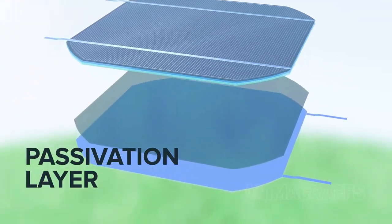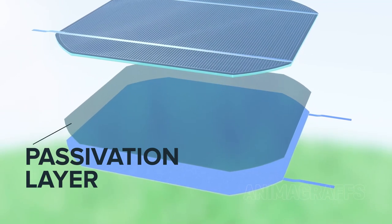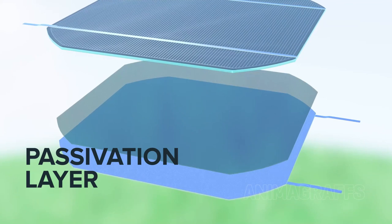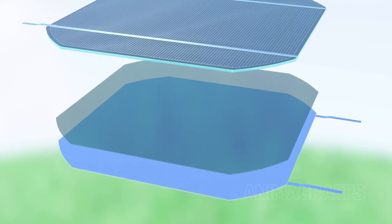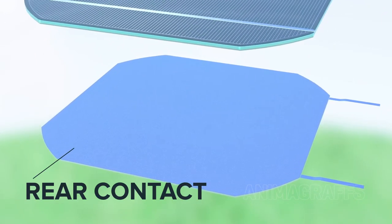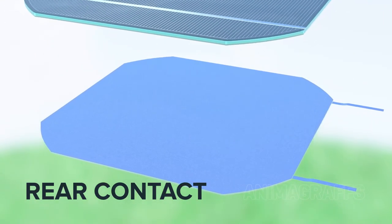Passivation layer. A special coating over the rear surface helps prevent early recombination of electrons and holes, and gives light another chance to bounce through the cell and be absorbed. A rear aluminum layer completes the electrical circuit. Electrical contacts protrude through the passivation layer.